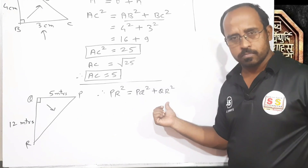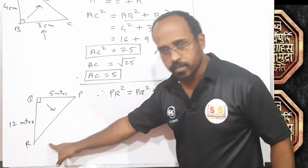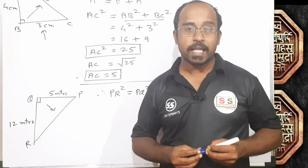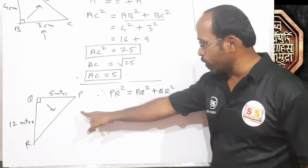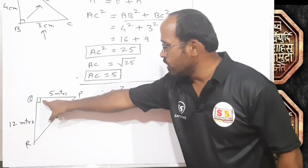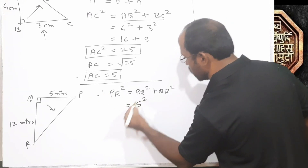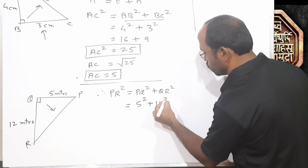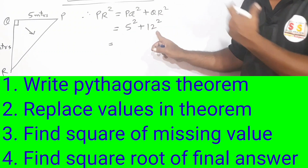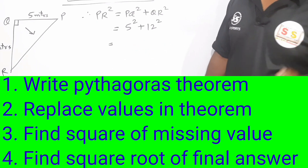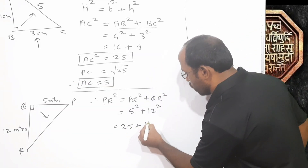The length of PR will depend on this rule, which is called Pythagoras theorem. According to the Pythagoras theorem, we cannot directly find out the length of a side — first we have to find the square of the side, then based on that we can find the length. So, square of PR equals square of PQ plus square of QR. PQ is 5, so 5 squared plus QR is 12, so 12 squared. Solving the indices first: 5 squared equals 25, plus 12 squared equals 144.